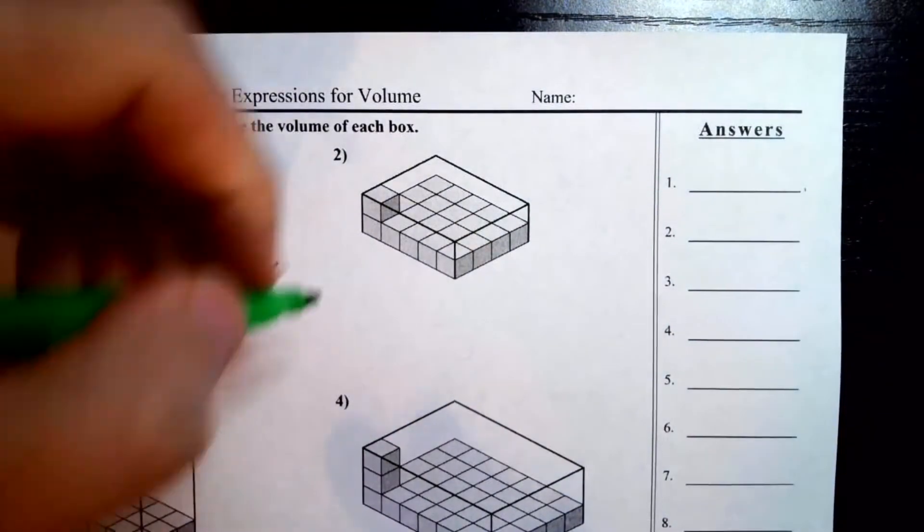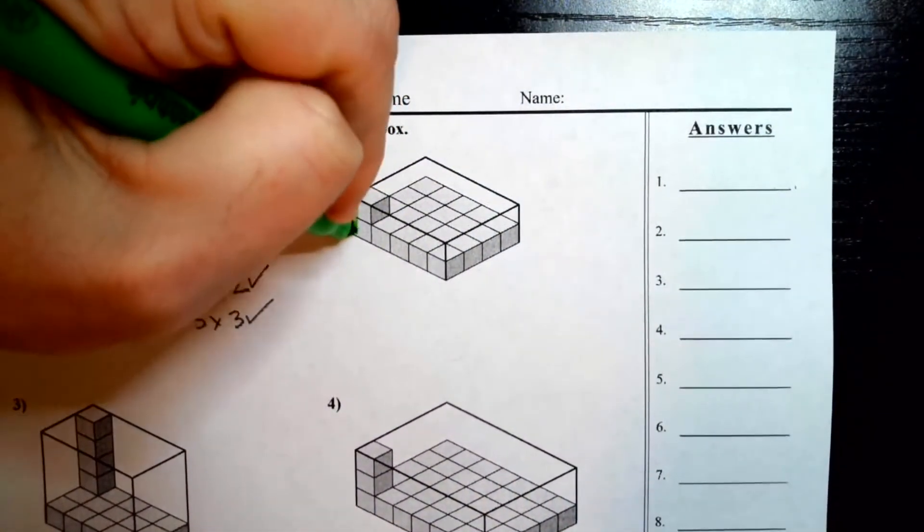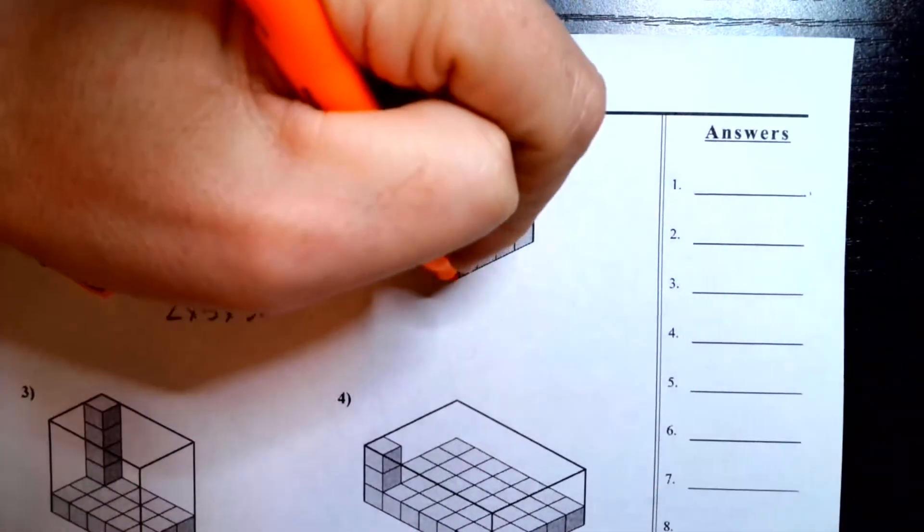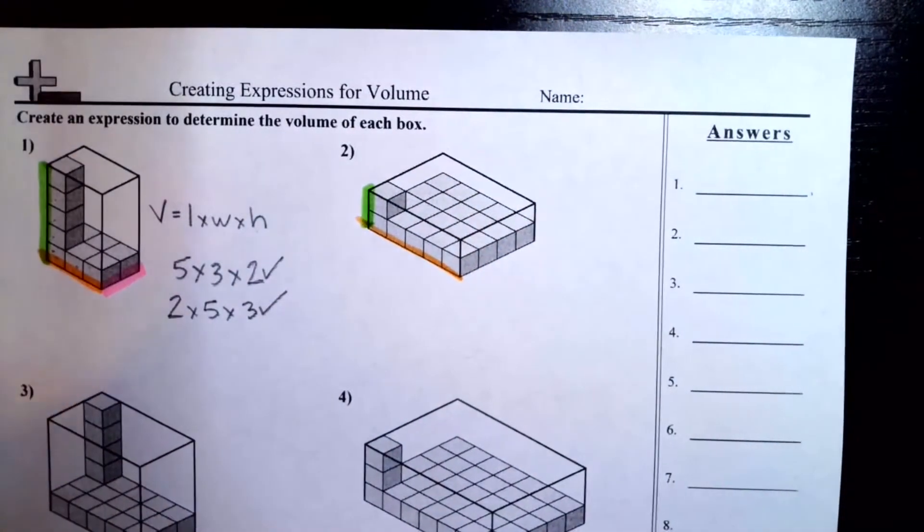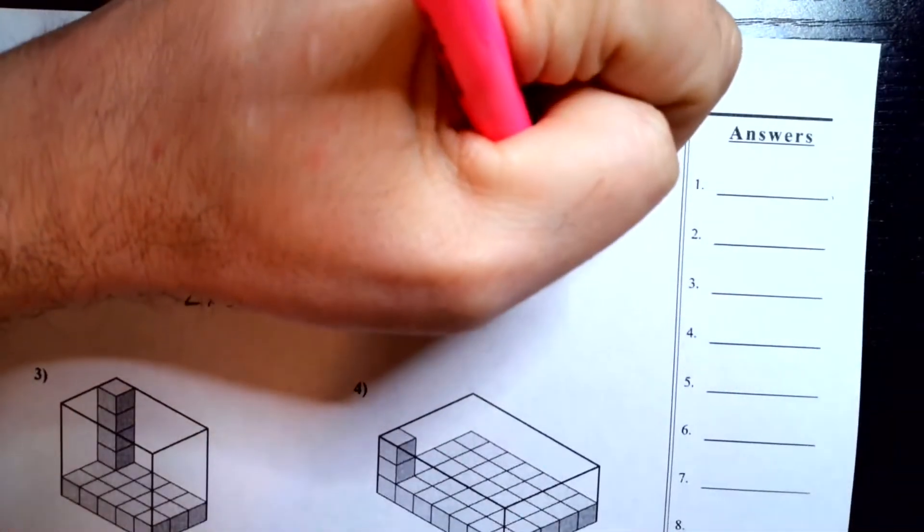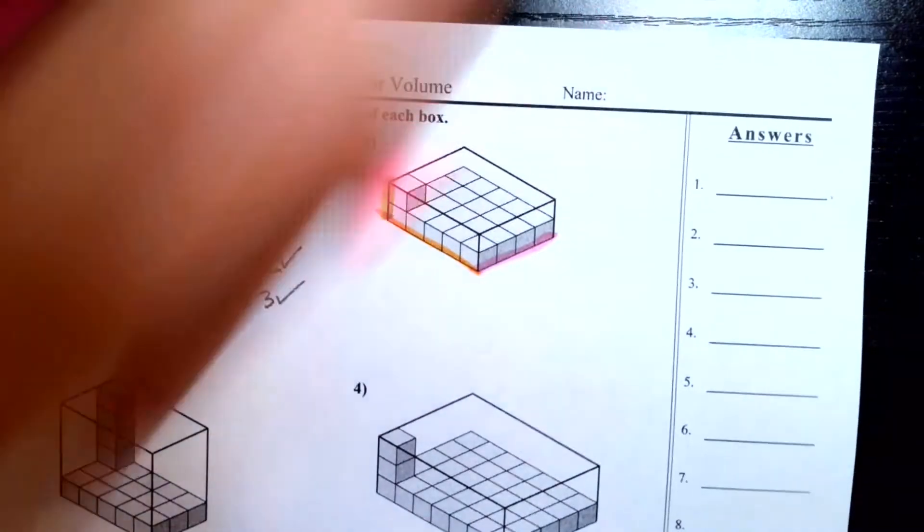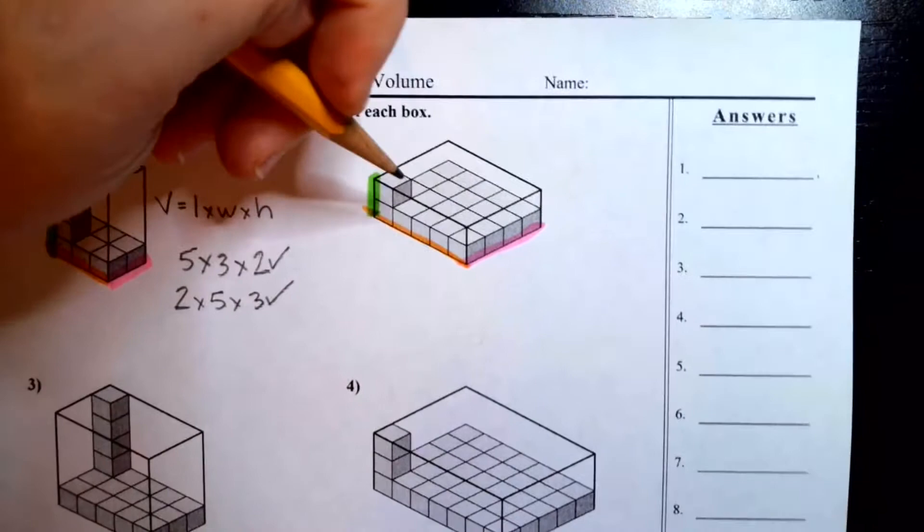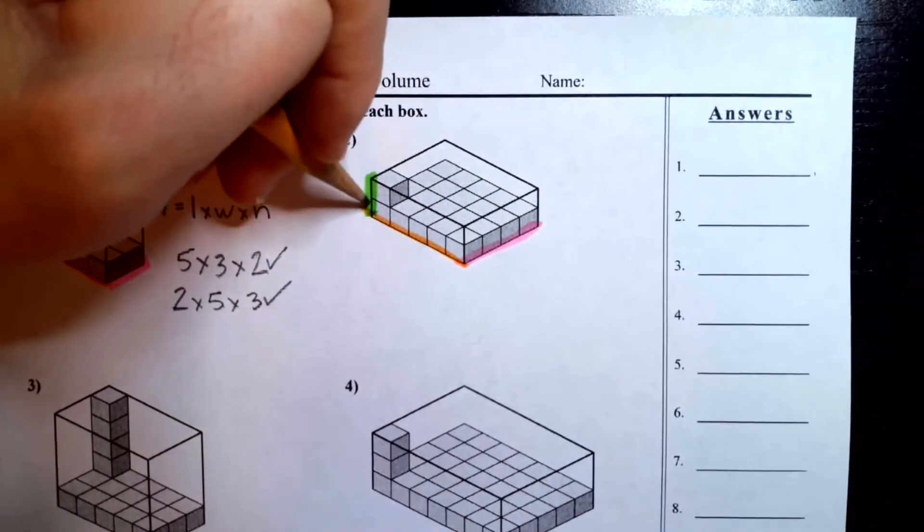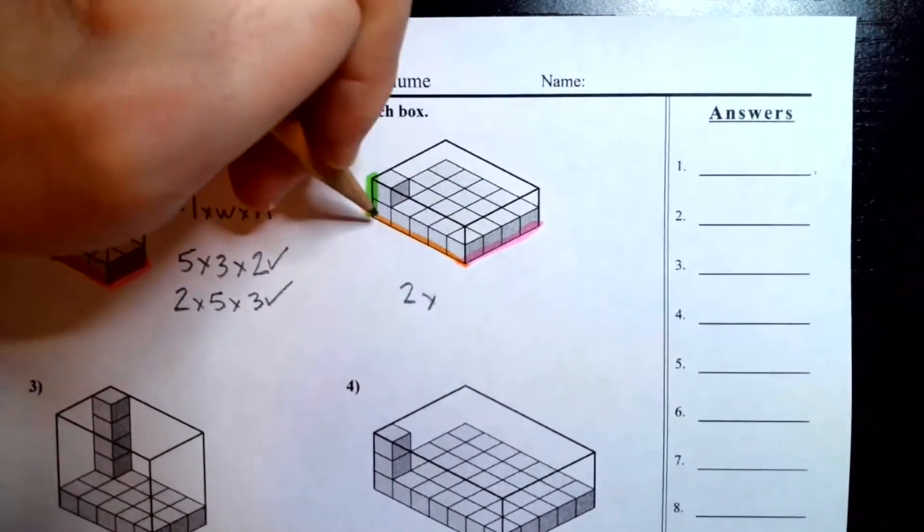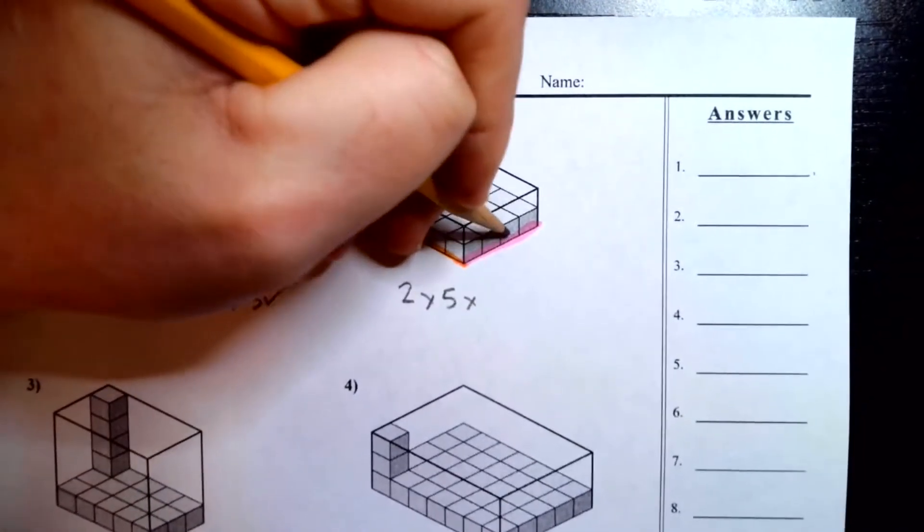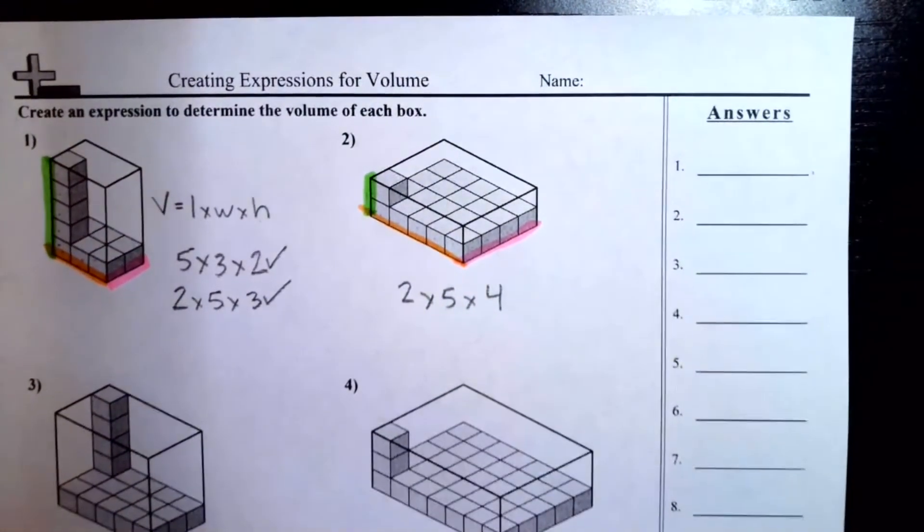So again, we've got our height. We've got our length and then we have our width and width is the shortest side. Length is the longest side. And then height is how tall it is. So an expression for this one, we could, if we want to go in order length with height, we'd say two times one, two, three, four, five, two times five times one, two, three, four, two times five times four.